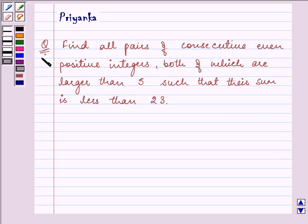Hello, the question says, find all pairs of consecutive even positive integers, both of which are larger than 5, such that their sum is less than 23.